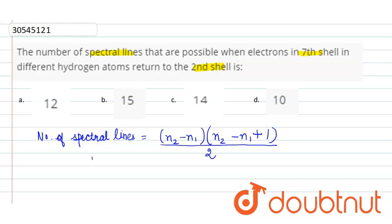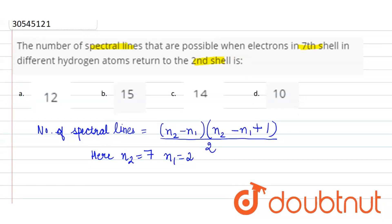Here, n2 is 7 and n1 is 2, because the electron jumps from the 7th shell to the 2nd shell. By simply putting the values, we get the number of spectral lines as (7 minus 2) multiplied by (7 minus 2 plus 1) divided by 2.